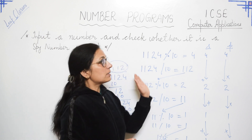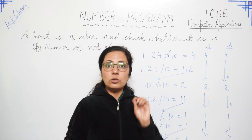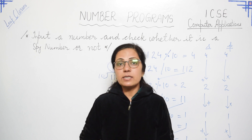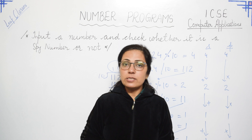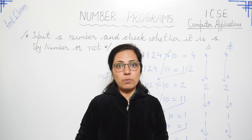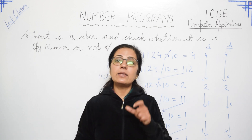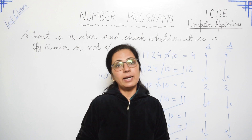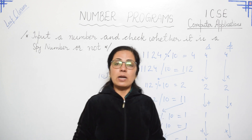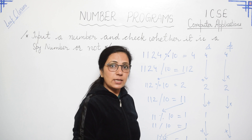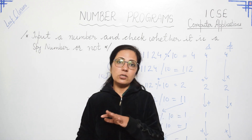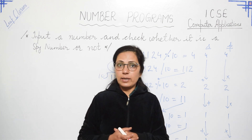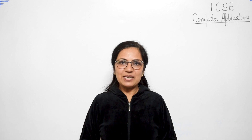If sum equals product, the number is a spy number; otherwise it is not. This program should work for any number of digits — two digit, one digit, five digits, or any number of digits. We don't write the program for one particular number; it should be universally true for each and every number entered by the user. I hope the logic is clear — please try to understand and practice with me.